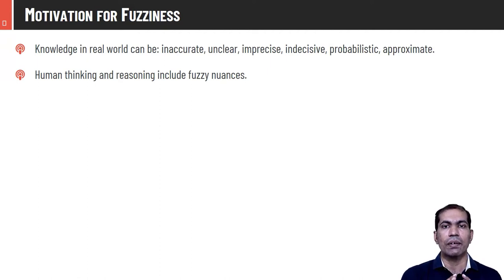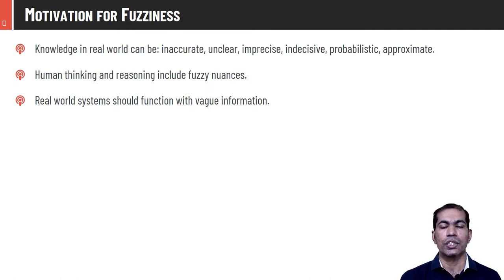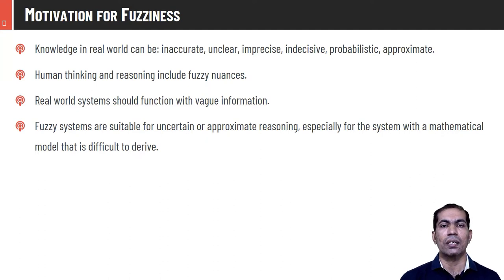Real-world systems should function with vague information, as inputs may be missing, scaled, have measurement errors, or data entry errors. Fuzzy systems are suitable for uncertain or approximate reasoning, especially for systems with mathematical models that are difficult to derive. In many cases where it is hard to derive mathematical models, fuzzy logic can easily model those phenomena.